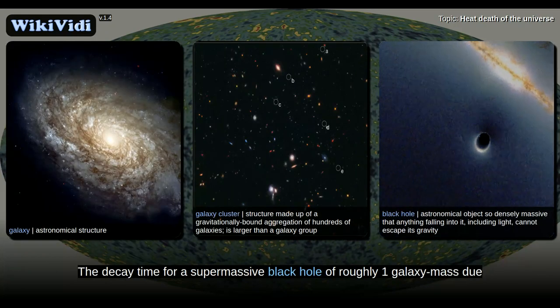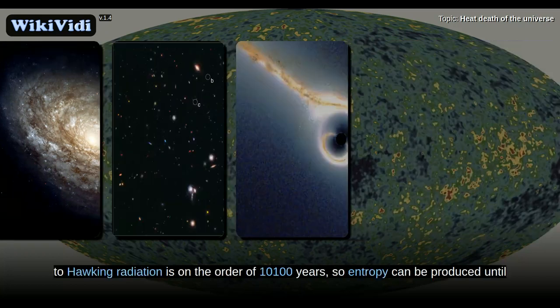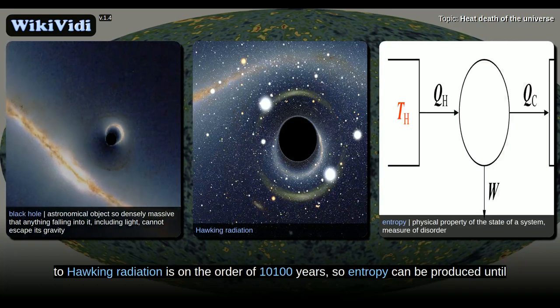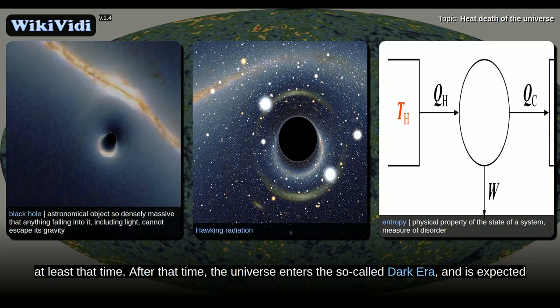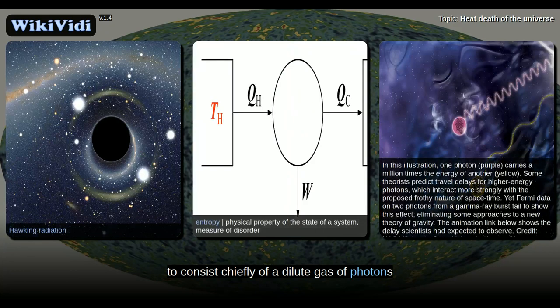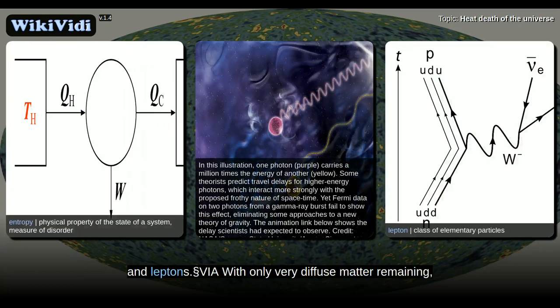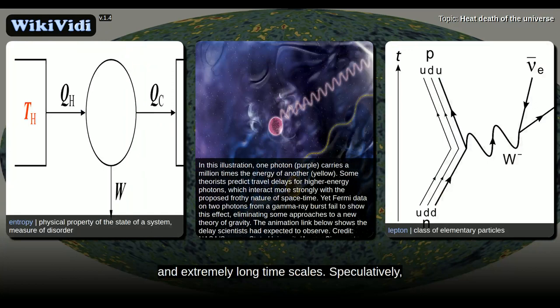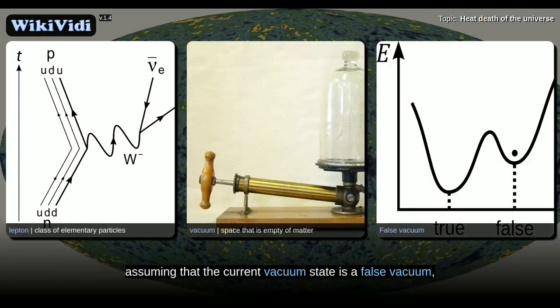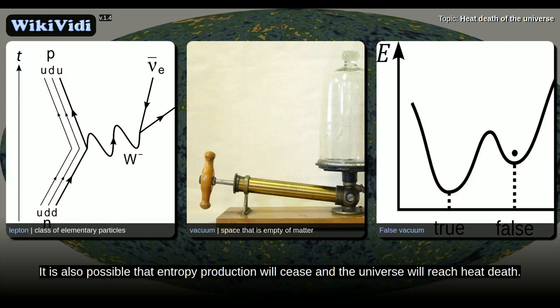The decay time for a supermassive black hole of roughly one galaxy mass due to Hawking radiation is on the order of 10^100 years, so entropy can be produced until at least that time. After that time, the universe enters the so-called dark era, and is expected to consist chiefly of a dilute gas of photons and leptons, with only very diffuse matter remaining. Activity in the universe will have tailed off dramatically, with extremely low energy levels, and extremely long time scales. Speculatively, it is possible that the universe may enter a second inflationary epoch, or, assuming that the current vacuum state is a false vacuum, the vacuum may decay into a lower energy state. It is also possible that entropy production will cease and the universe will reach heat death.